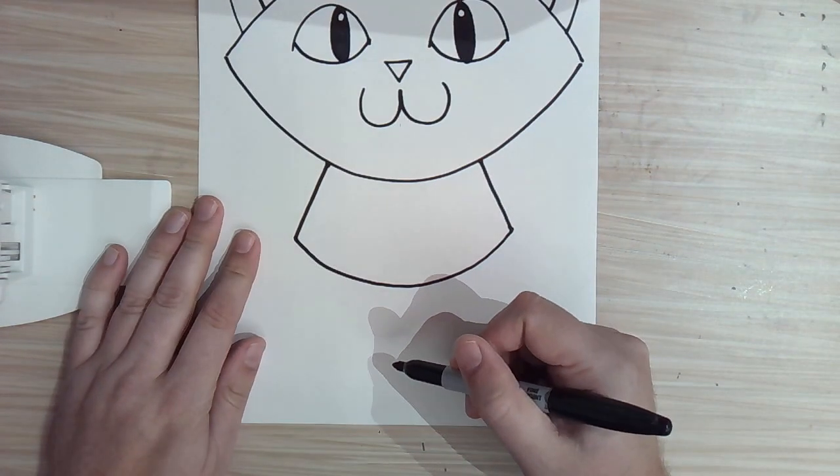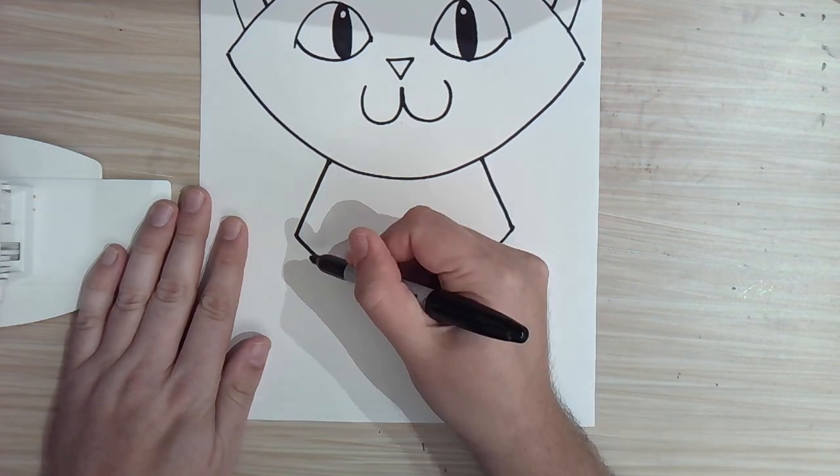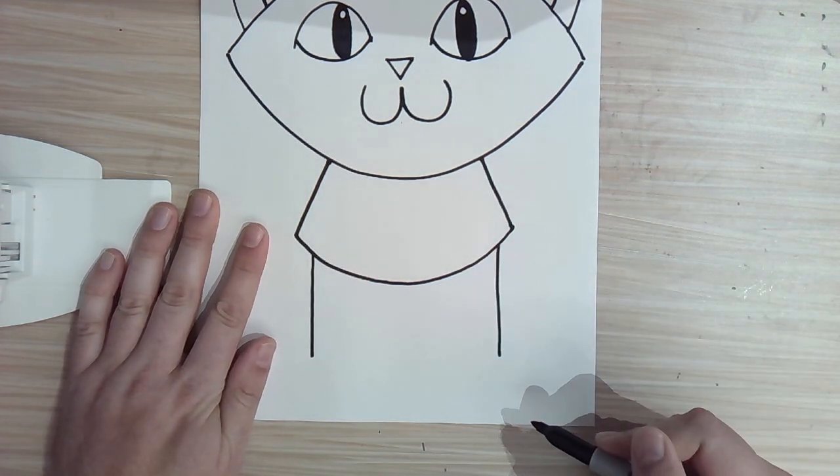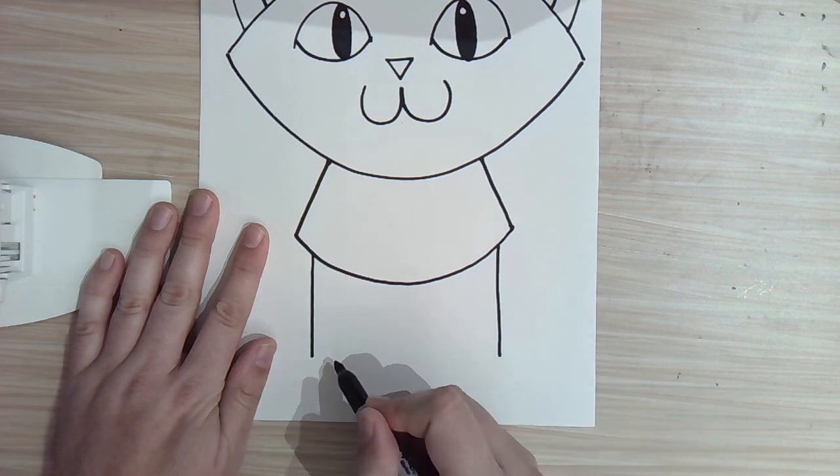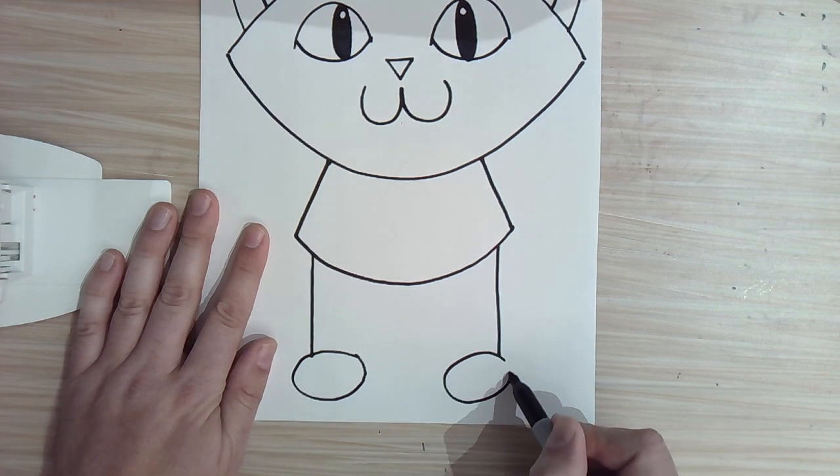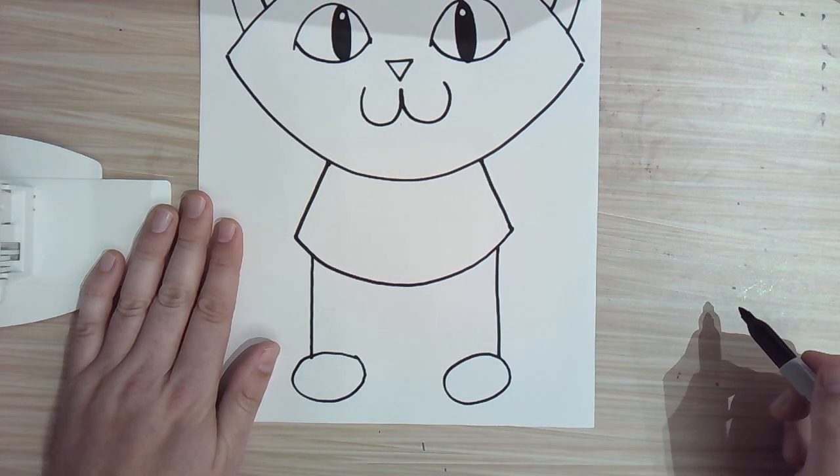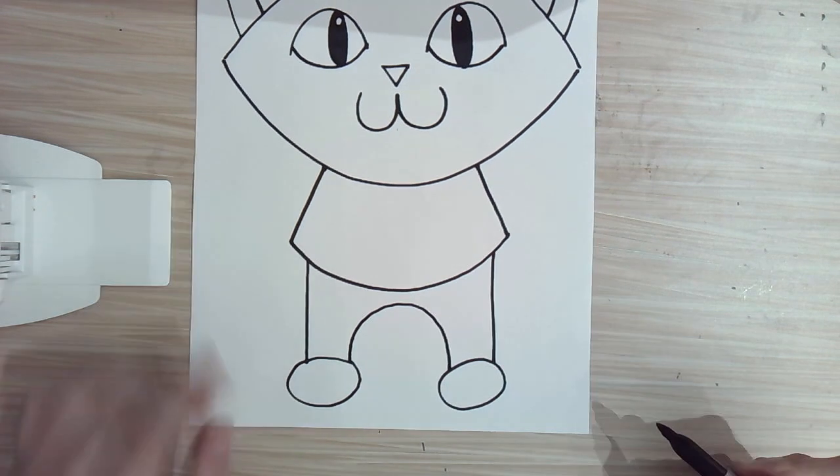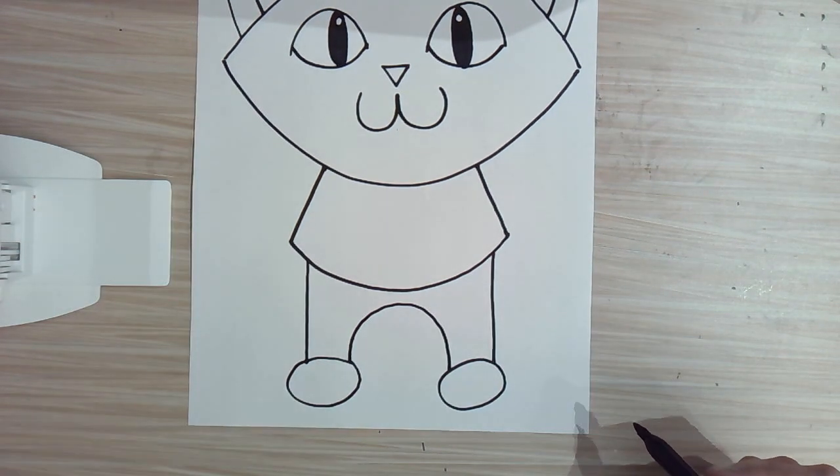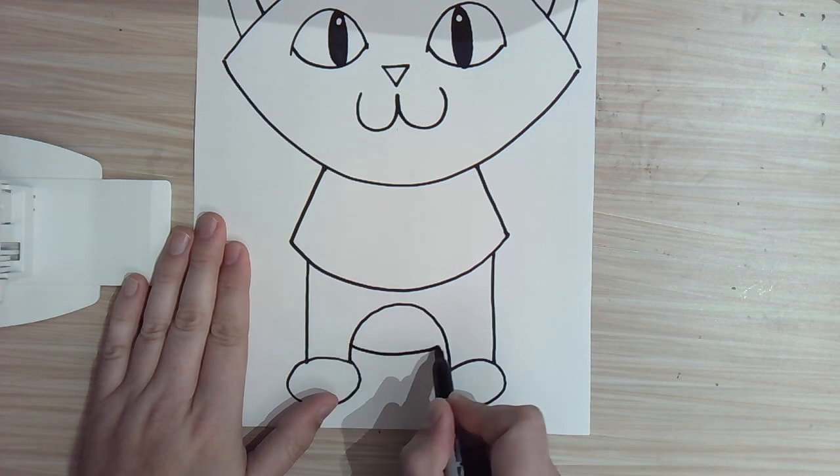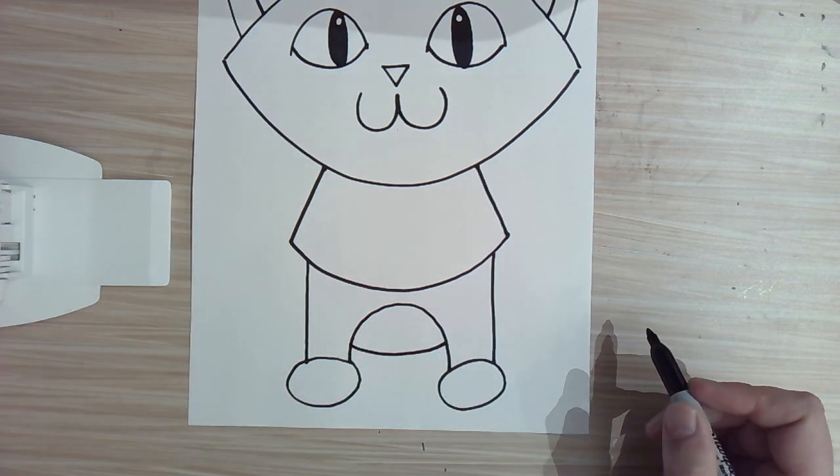So now it's time for us to do the legs of the kitten. So from here, let's bring a line straight down. And on this side, let's bring a line straight down. I'm going to make an oval foot and an oval foot. And I'm going to connect these with a rainbow. Inside of that rainbow, let's make an upside down rainbow for the kitten's belly.